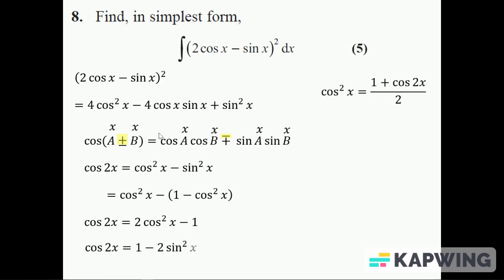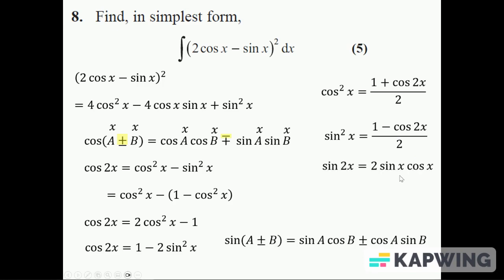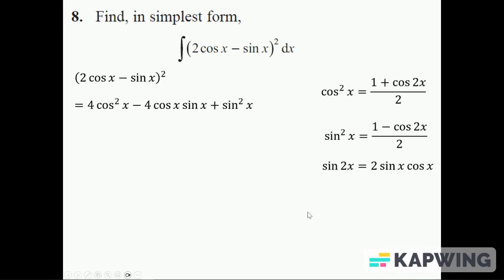You can also do a similar thing and replace the cos squared with 1 - sin squared, which rearranges to give you sin^2 x = (1 - cos 2x)/2, and that's what we're going to use to integrate sine squared. Also, there's the compound angle formula for sine: if I replace the A's and B's with x again, I get that double angle formula sin 2x = 2sin x cos x, which I'm also going to use for that middle term.